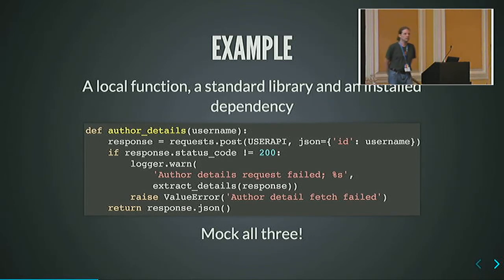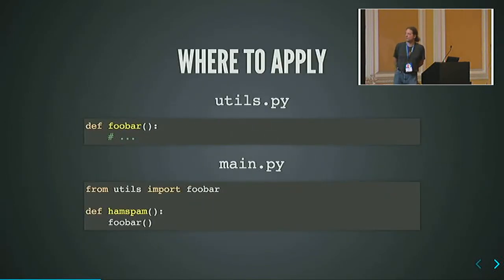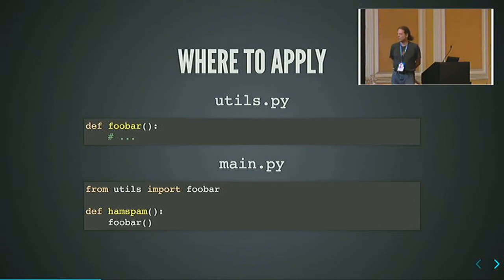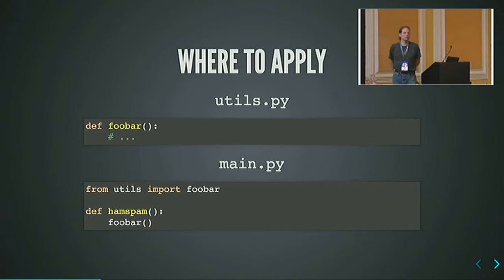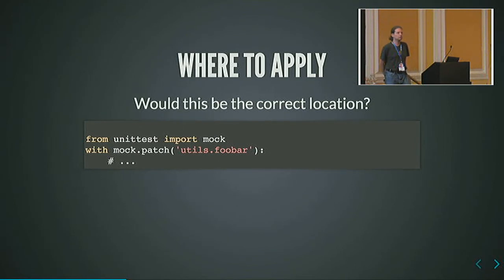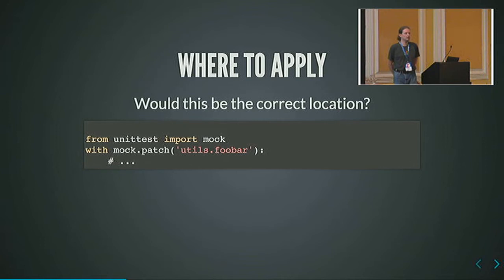If you want to mock out extract_details, or any other utility function — say foobar from utils — it's been imported into the main module and we're going to test ham.spam. Where are you going to mock foobar? Most people think it's defined in utils, so they mock it there: mock utils.foobar, run the test. But then they run ham.spam and foobar is still being executed as the normal function. What happened? I thought I mocked it.